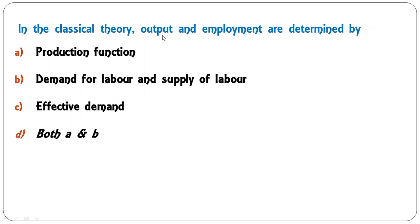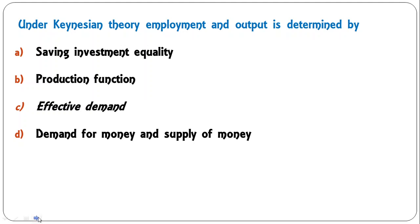In classical theory, output and employment are determined by production function, demand for labor and supply of labor, effective demand, or both A and B? The correct answer is both A and B — these two factors determine output and employment under classical theory. The effective demand concept was given by Keynes, not by classical economists. So C is the correct answer.